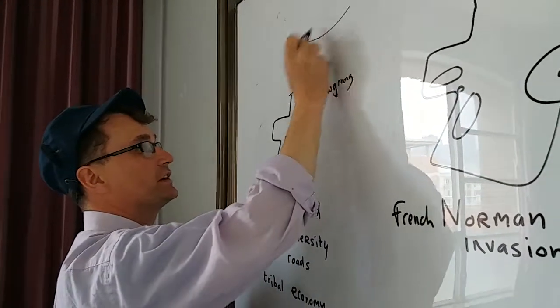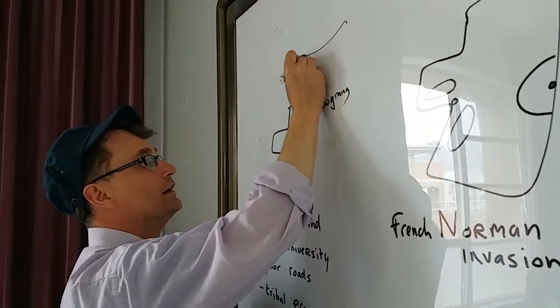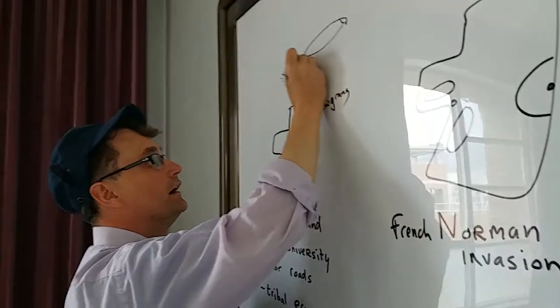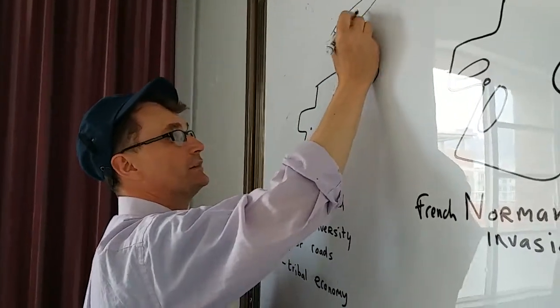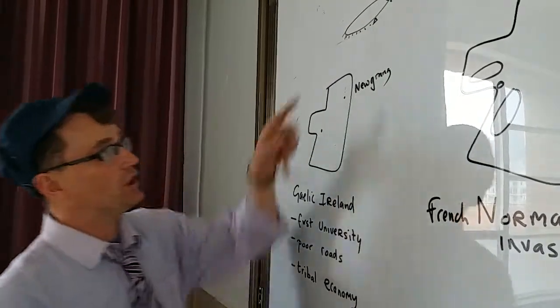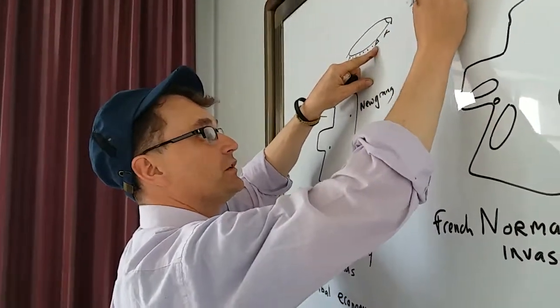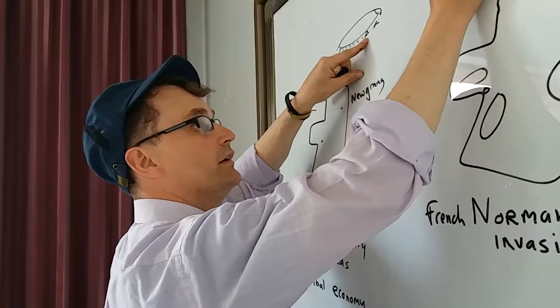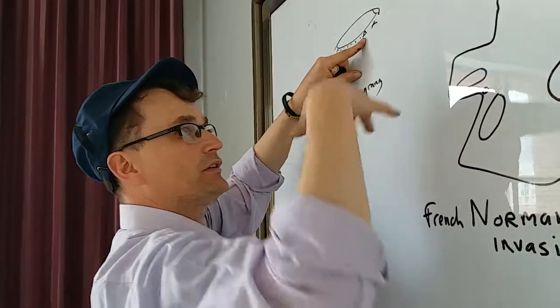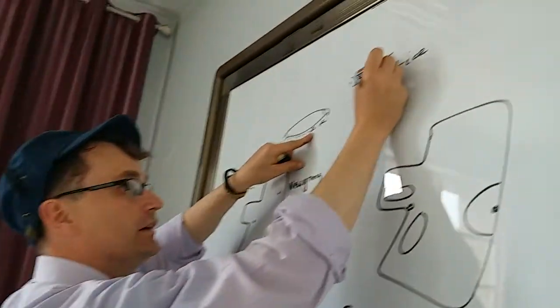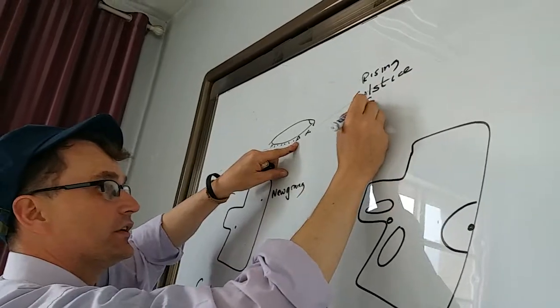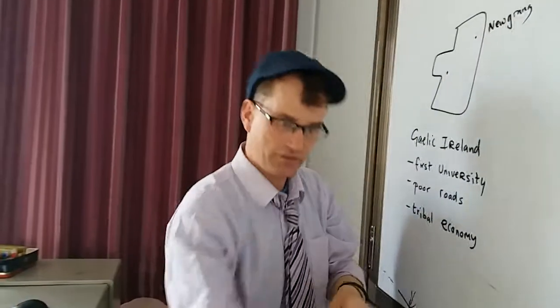Newgrange kind of looks like a circular building like this. It's a circular mountain and there's a sort of door at the front which lets in the light at the solstice. The rising solstice sun penetrates the tomb.